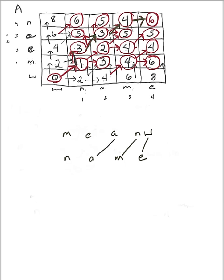To get to this point, I followed this arrow, which means I had to insert a blank on the name string and regress 1 on the mean string. Then from here, to go back, I need to go back on both. So by calculating my cost, I've got 1 plus 2 plus 0 plus 1 plus 2, which totals 6. There's my cost — that's how I went backwards to do the traceback and figure out what the proper matching is.